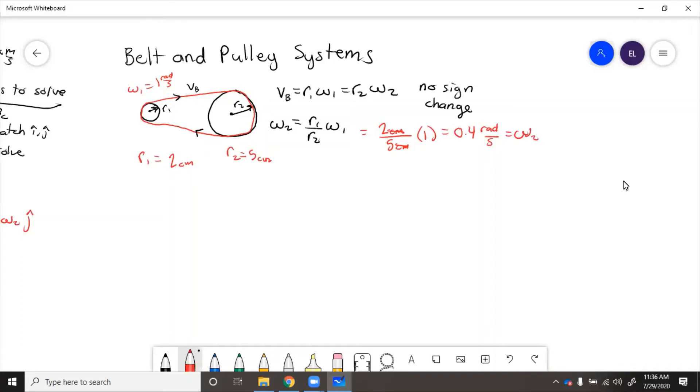Now for a reality check, we just say, okay, this pulley is bigger. So if it's bigger and it's got the same linear speed on the edge, it must be rotating more slowly. So 0.4 is less than 1. That's our reality check.